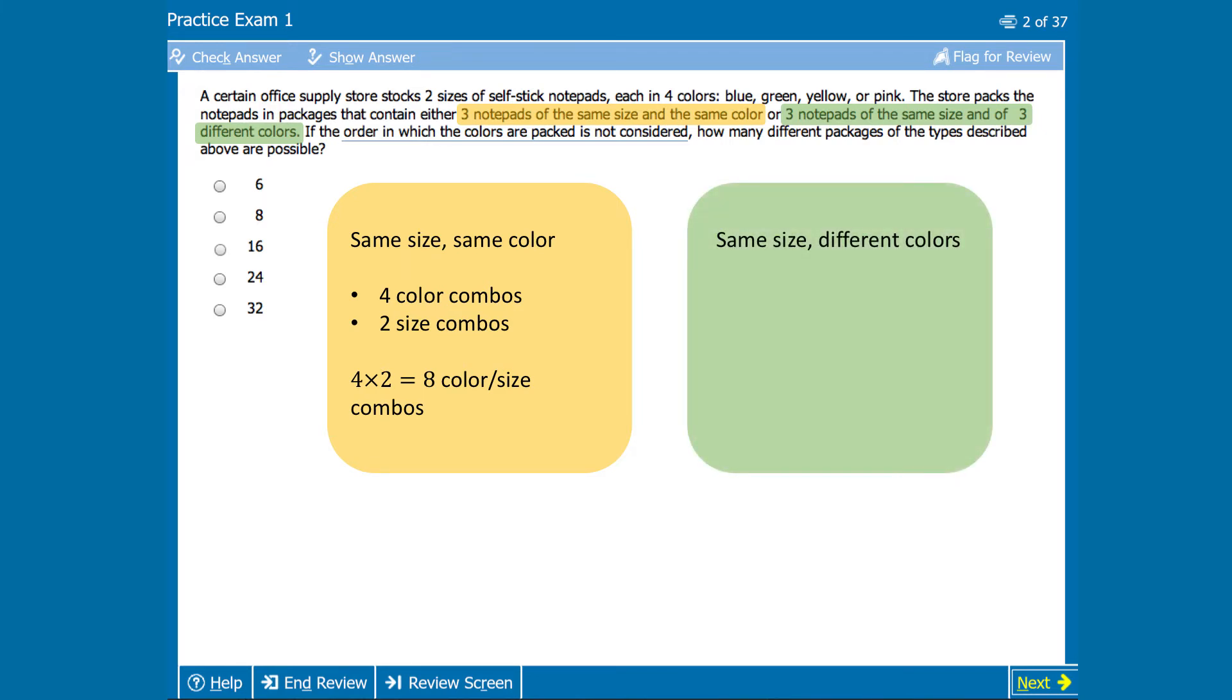Again, we'll start by thinking only about color. In this type of package, all three notepads have different colors. A little trickier. This means that we're trying to find out how many different ways we can pick three out of the four possible colors, or a four choose three combination.